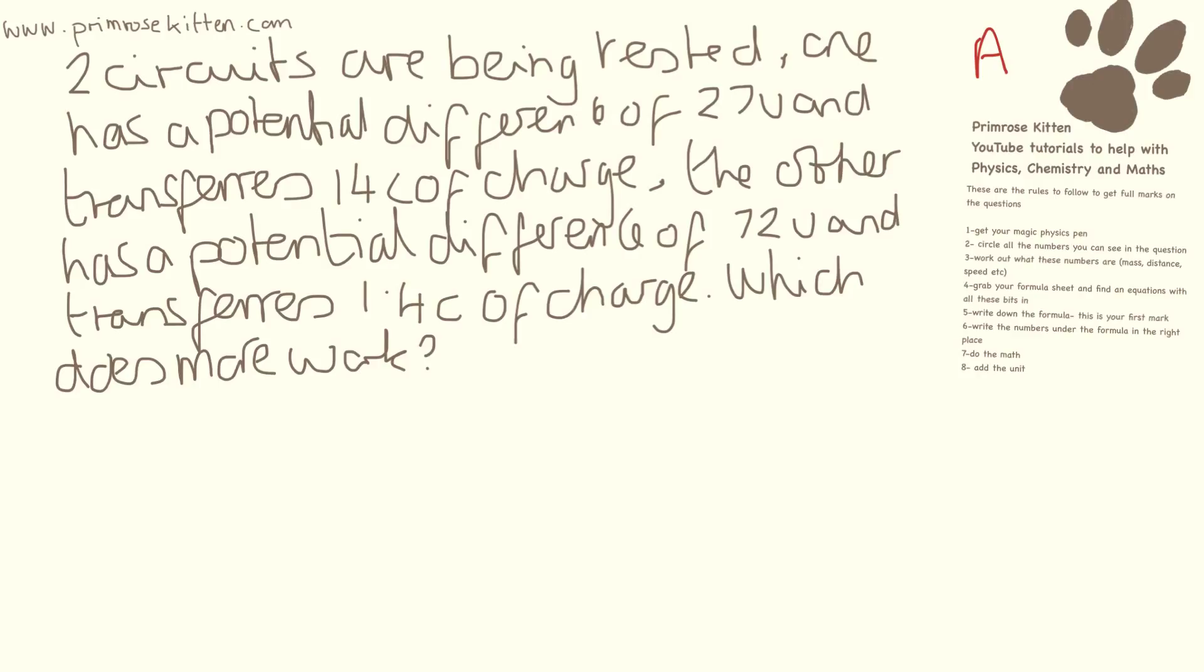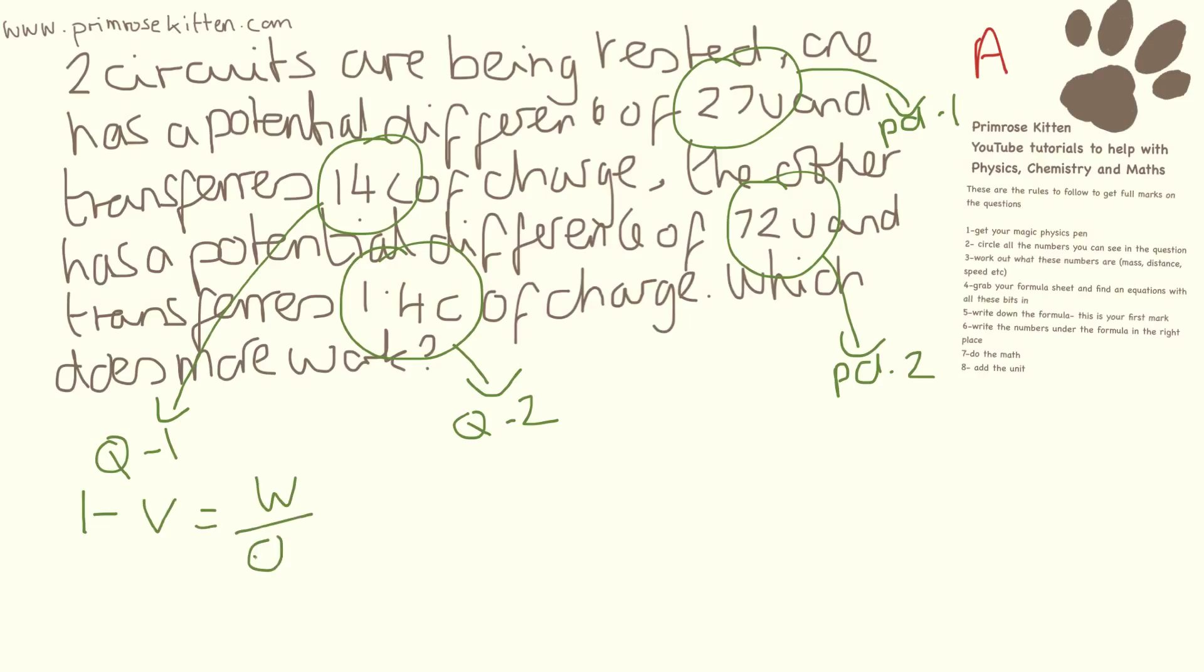So two circuits are being tested. One has a potential difference of 27 volts and carries 14 coulombs of charge. The other has a potential difference of 72 volts and transfers 1.4 coulombs of charge. This is the sort of situation that makes it really important for you to circle the relevant numbers and start to label them properly. So here we have potential difference of circuit 1. And this is charge of circuit 1. This is charge of circuit 2. And this is potential difference of circuit 2. So if we look at circuit number 1 over here. We have V equals W over Q. We have 27 equals W over 14. So that is going to be 27 times 14 equals W. 27 times 14 gives us 378 joules.